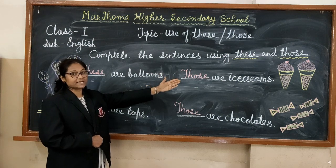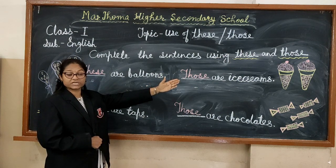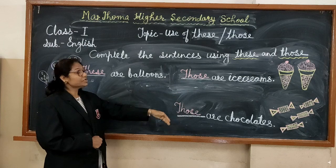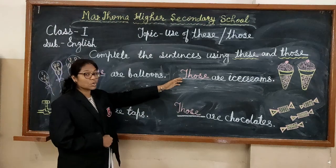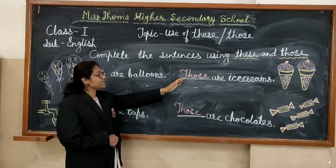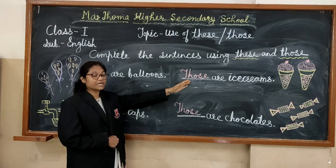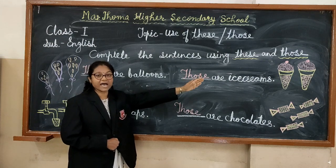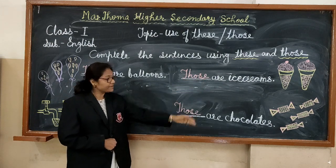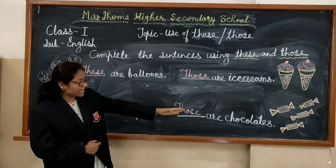There are two ice creams but the ice creams are not near to me. So I use 'those' — T-H-O-S-E — and we can say: those are ice creams. Now see the picture of chocolates.